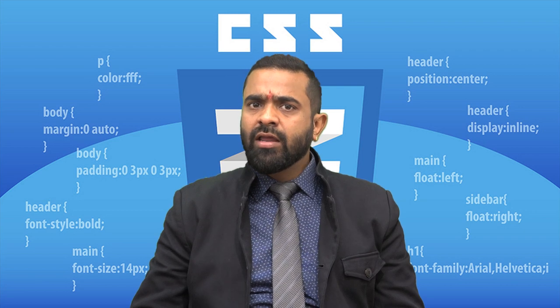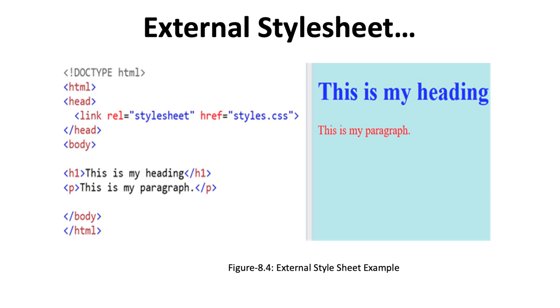The main feature to recall is that if we want to use a style sheet across various pages, it is always recommended to define a common style sheet in a separate file. In another example: HTML, then head tag, then link rel equals to stylesheet, href equals to styles.css, then head tag is closed. In body, we have H1 'this is my heading,' then a paragraph 'this is my paragraph,' then body and HTML tags are closed.